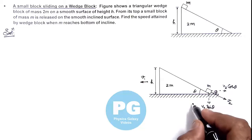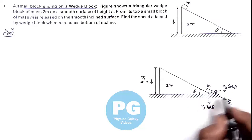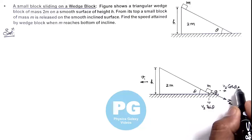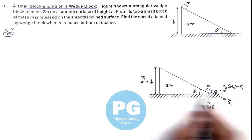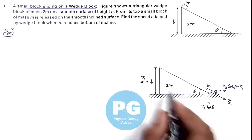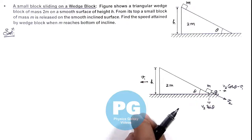So with respect to ground if we analyze, then the horizontal speed attained by the small m when it reaches the bottom is v2 cos theta minus v1 because it is placed on 2m, and in downward direction it is v2 sin theta only as the wedge block is not having any vertical velocity.